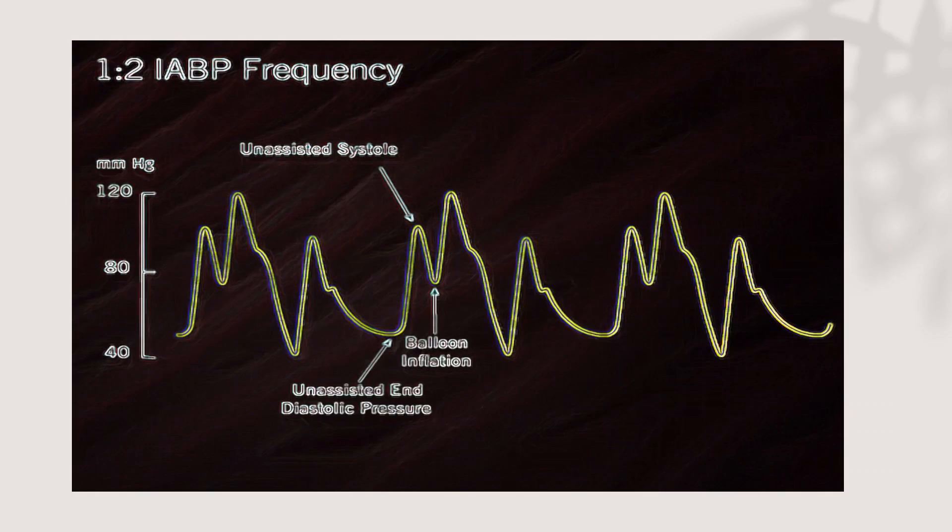If we need to interpret the waveform in the balloon pump, we should put the frequency one-to-two. After that, we should be searching for three ups and three downs. It's very important to know that this is called diastolic augmentation and should be above systolic pressure. This is the classic part of augmentation for intra-aortic balloon pump.